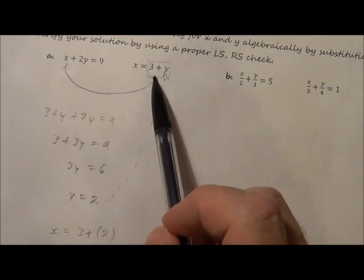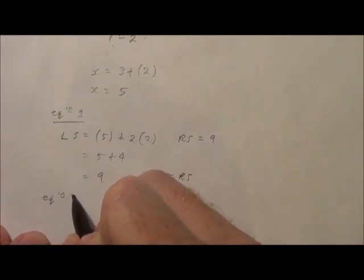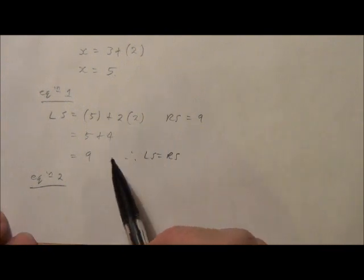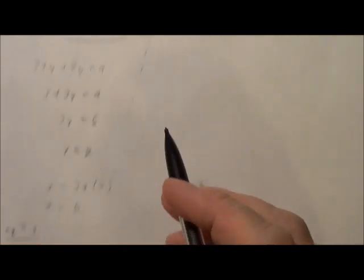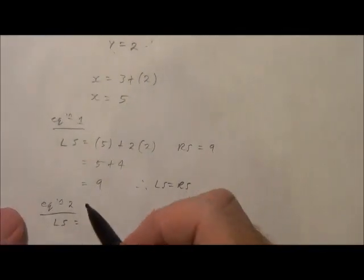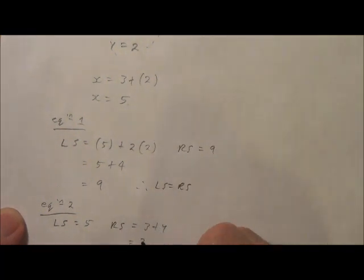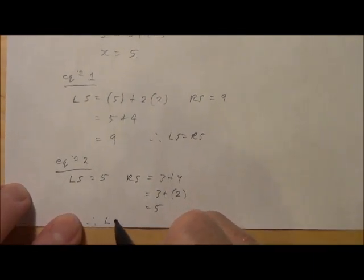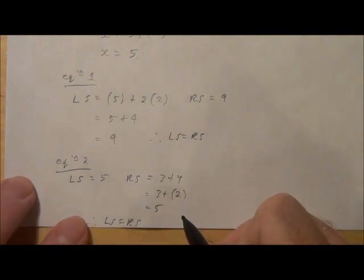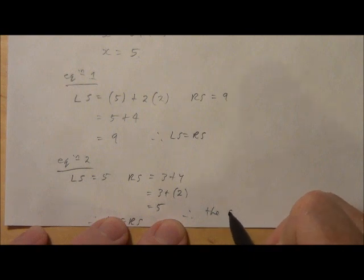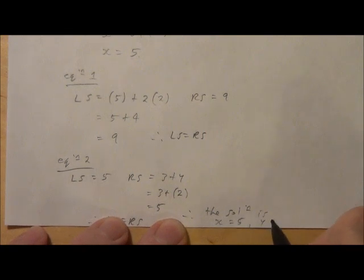Now that's for equation 1. Because we have two equations, here's the second equation we have to check. We also have to do the proper left side, right side check for equation 2. These solutions have to check in both equations. So left side equals, well the left side is just x, and we know that x is 5. The right side is 3 plus y. We know y is 2, so 3 plus 2 is 5. Therefore, left side equals right side. And then therefore, the solution is x equals 5 and y equals 2.